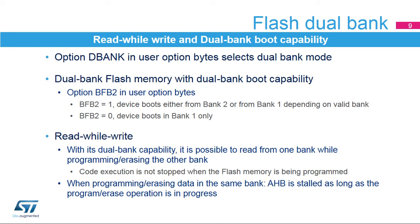The DBANK option is used to select either single bank or dual bank for category 3 devices. The flash memory can be configured to support two banks with read while write and dual bank boot capability, able to boot from either bank 1 or bank 2. The BFB2 option in the user option bytes selects the dual bank boot mode. When BFB2 is set, the device boots from bank 2 or bank 1 depending on the valid bank; when cleared, the device always boots from bank 1.